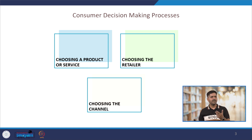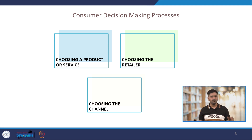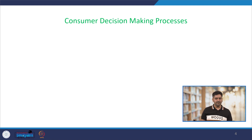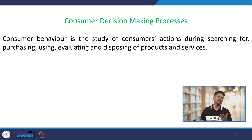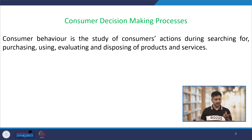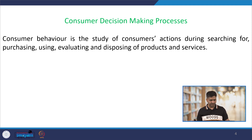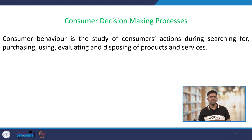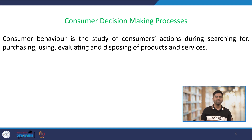Choosing the channel can be regarding choosing between online and offline channels, as well as other touch points which could be available. We will first talk about the consumer decision making process in general — why people buy certain products and services. For example, why someone would buy Woodland shoes or prefer Adidas or Nike. Consumer behaviour is simply the study of consumer actions and decisions during searching for, purchasing, using, evaluating, and disposing of products and services.